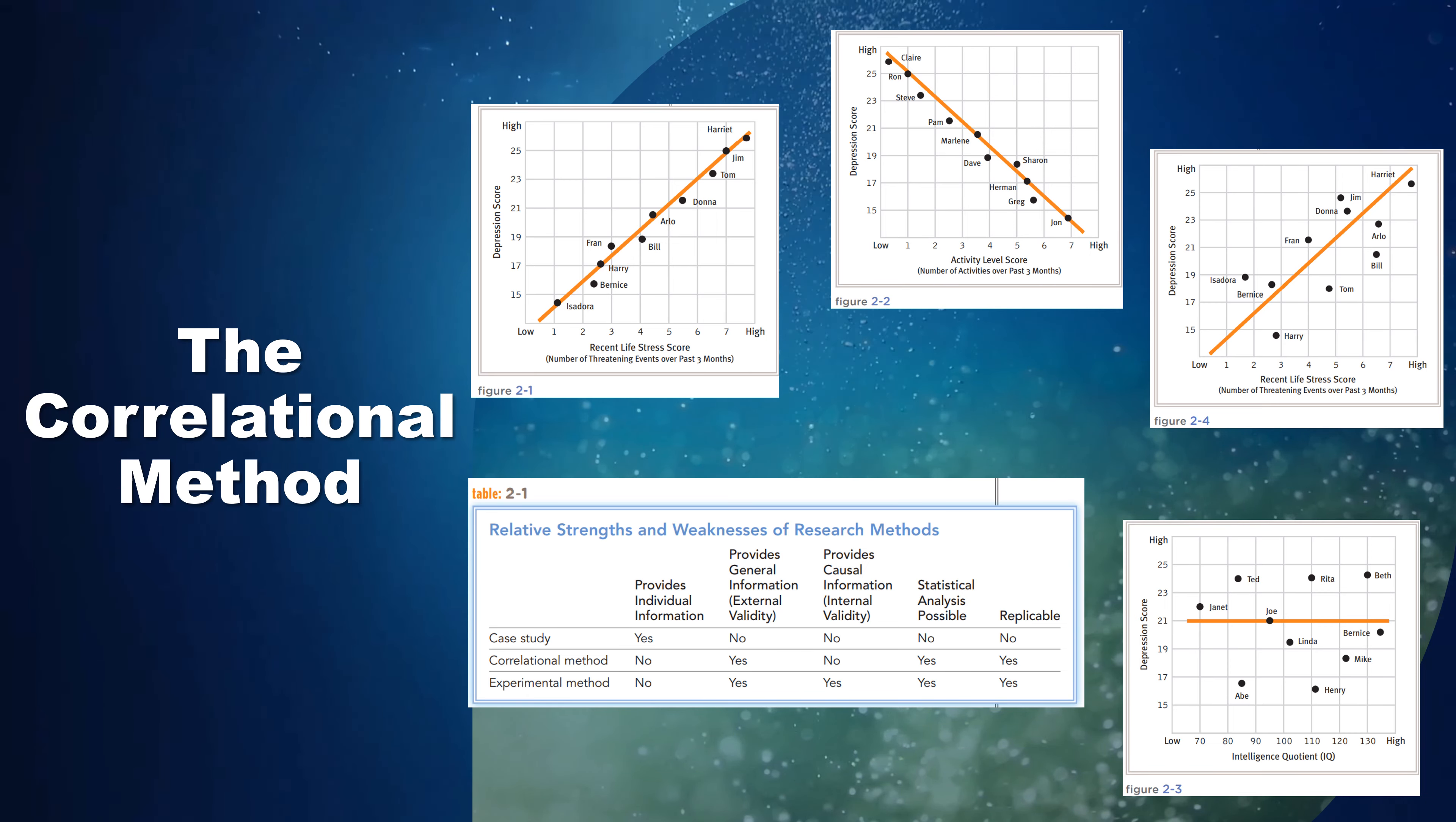Negative correlation: the relationship between number of activities and feelings of depression shown by this hypothetical sample is a near-perfect negative correlation. Correlations can have a negative rather than a positive direction. In a negative correlation, the value of one variable increases as the value of the other variable decreases.